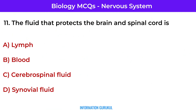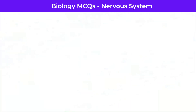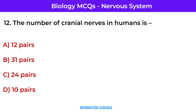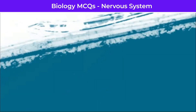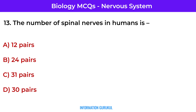The fluid that protects the brain and spinal cord is cerebrospinal fluid. The number of cranial nerves in humans is 12 pairs. The number of spinal nerves in humans is 31 pairs.